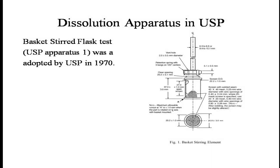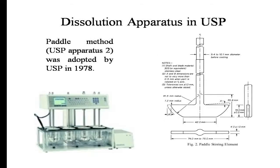Now we will discuss types of USP dissolution apparatus. The first is the basket stirred flask test, USP Apparatus 1, which was adopted by USP in 1970. You can see the picture of this apparatus assembly and its elements.